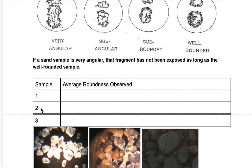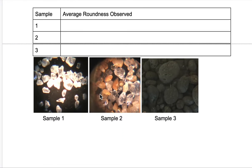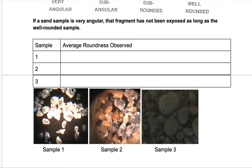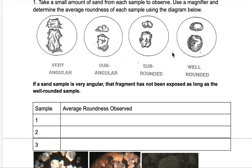For sample two, determine whether it is very angular, sub-angular, sub-rounded, or well-rounded. Then look at sample three and decide whether it is very angular, sub-angular, sub-rounded, or well-rounded. If you don't have access to a microscope, here are pictures of samples one, two, and three under a microscope. Look at the particles, decide how rounded they are by comparing the corners of your samples to the diagram, and make a decision.